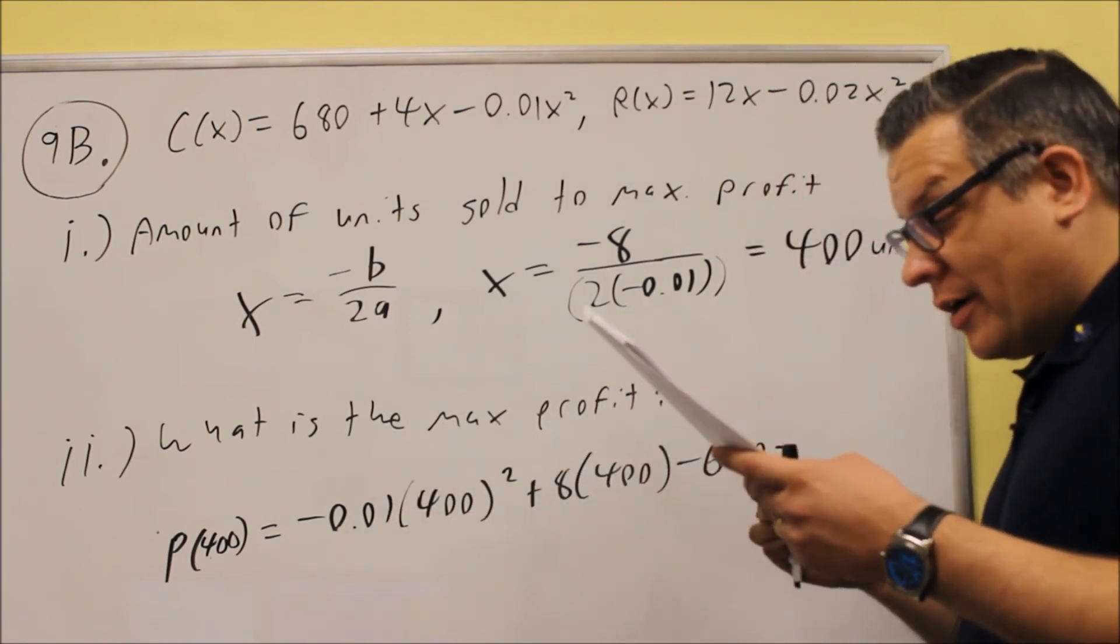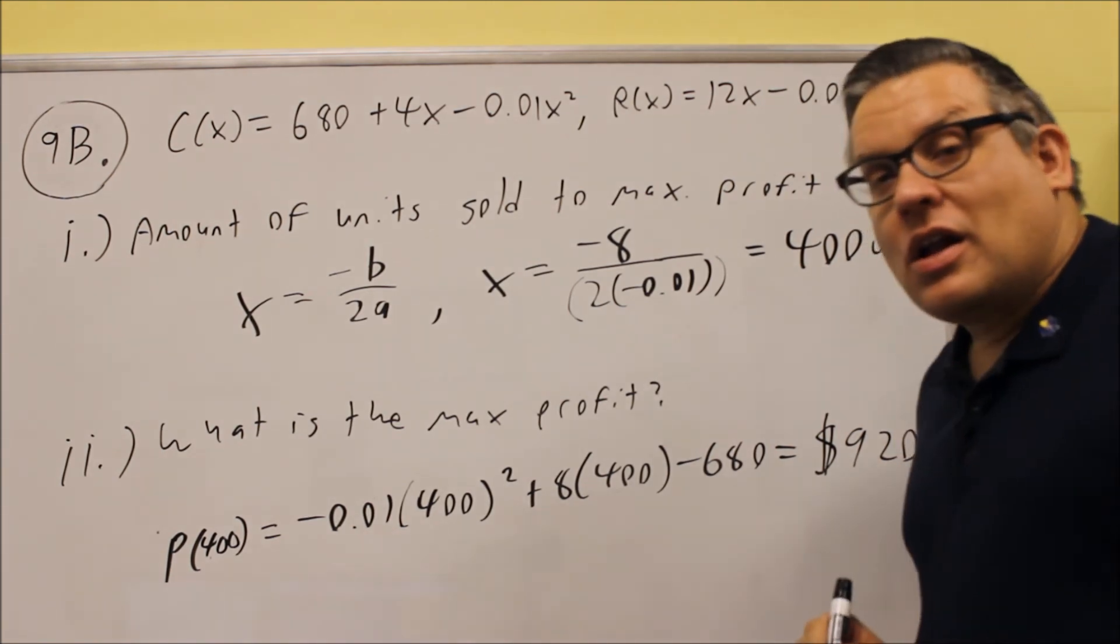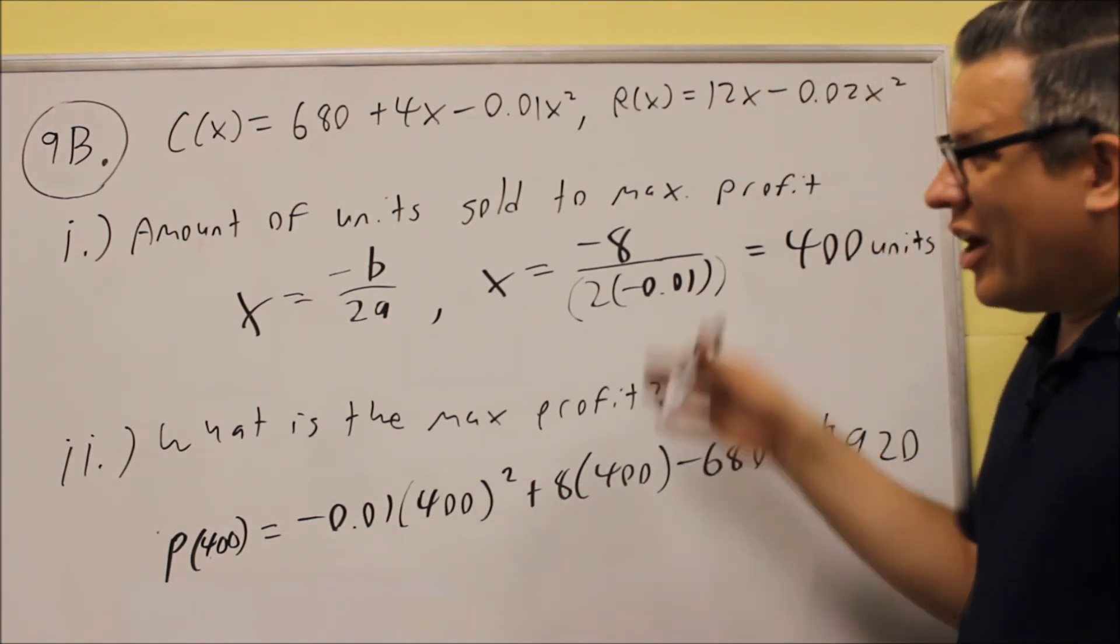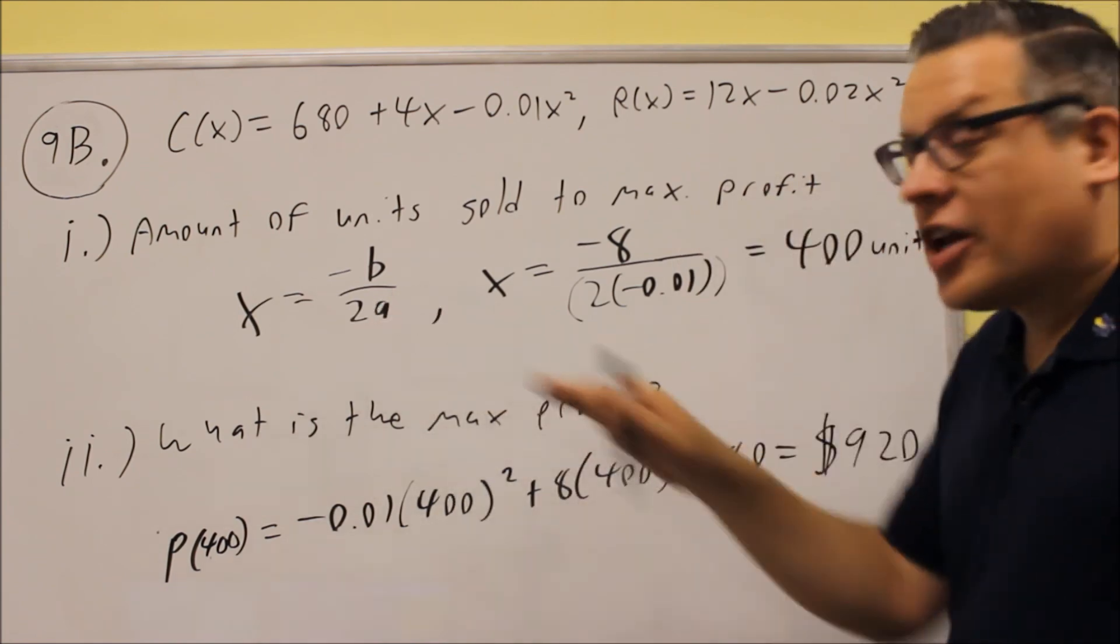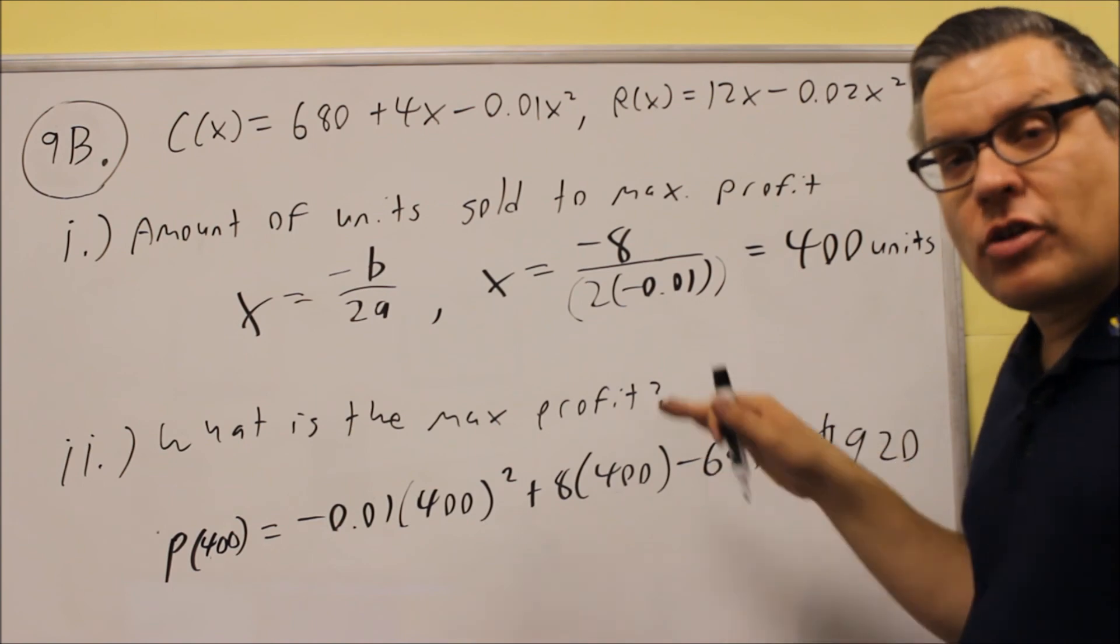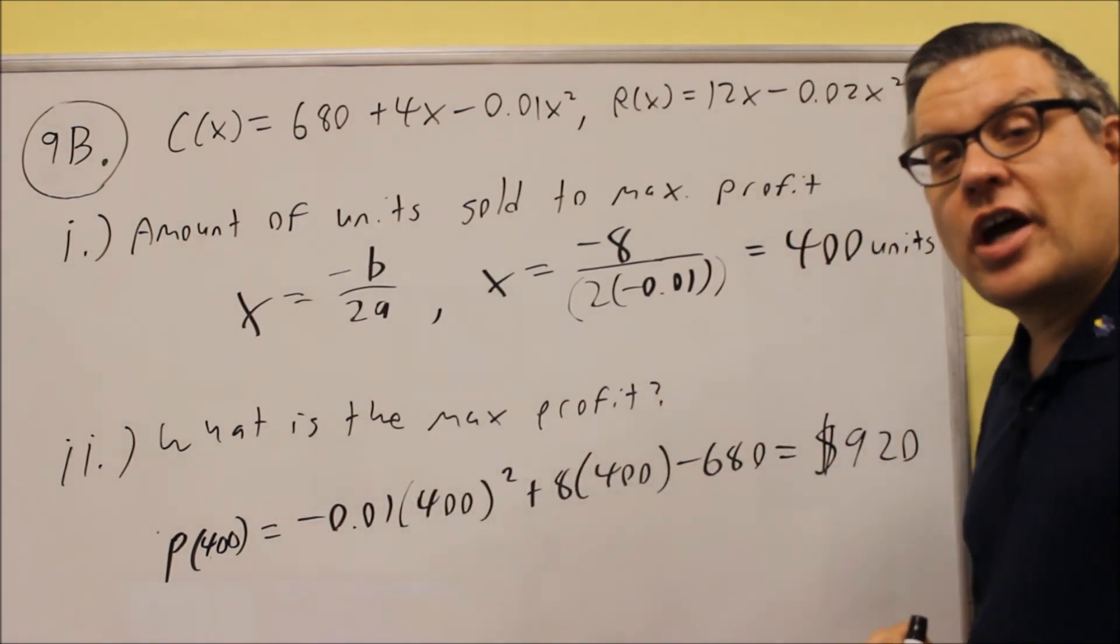We're going to work that out in the calculator, and your profit's going to be $920 if you work all that out. So the first part, we had to find the formula first and do negative b over 2a to get the answer 400 units. Second part, for the profit, we just plug that number back in. That's our final answer, 920.